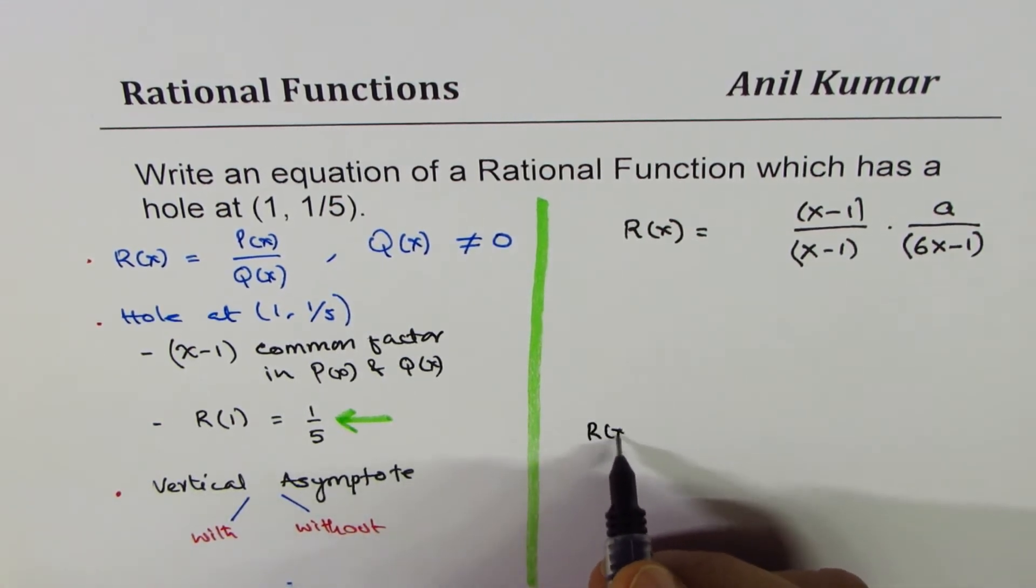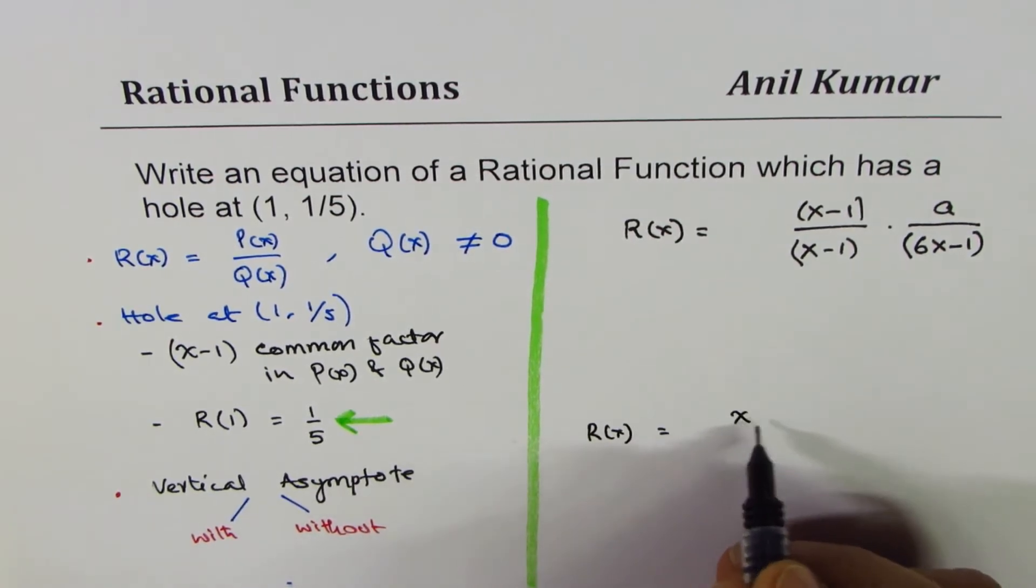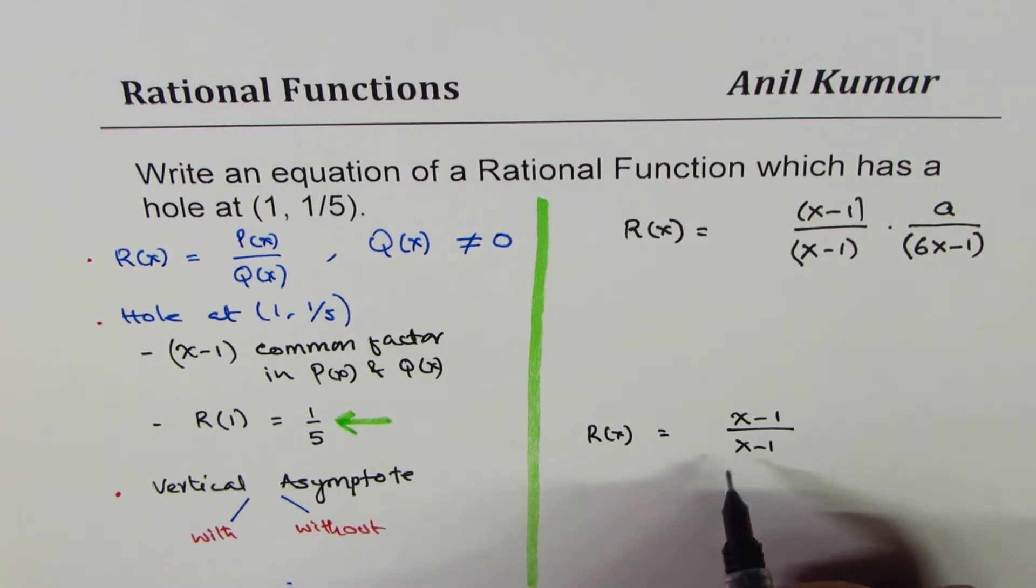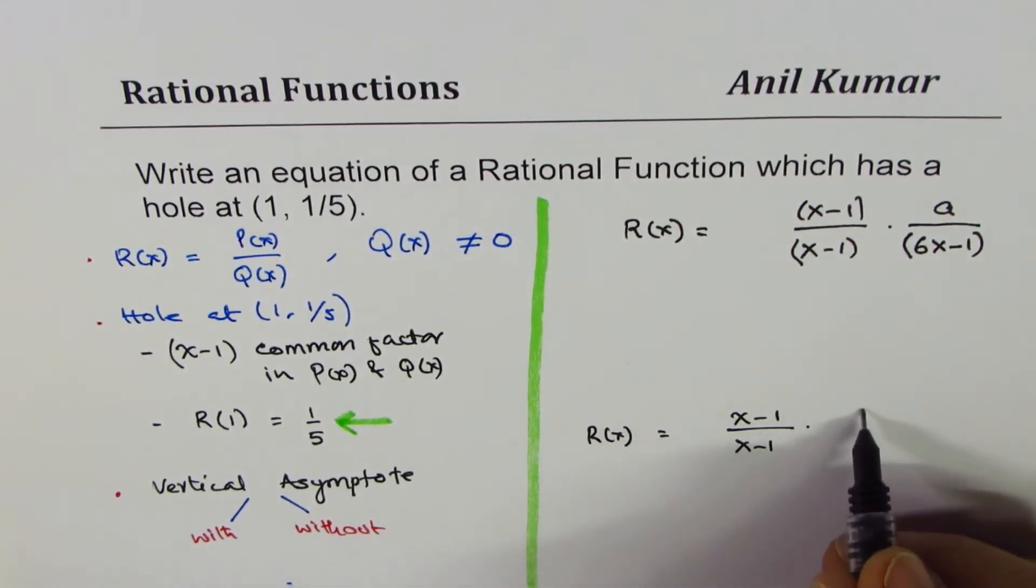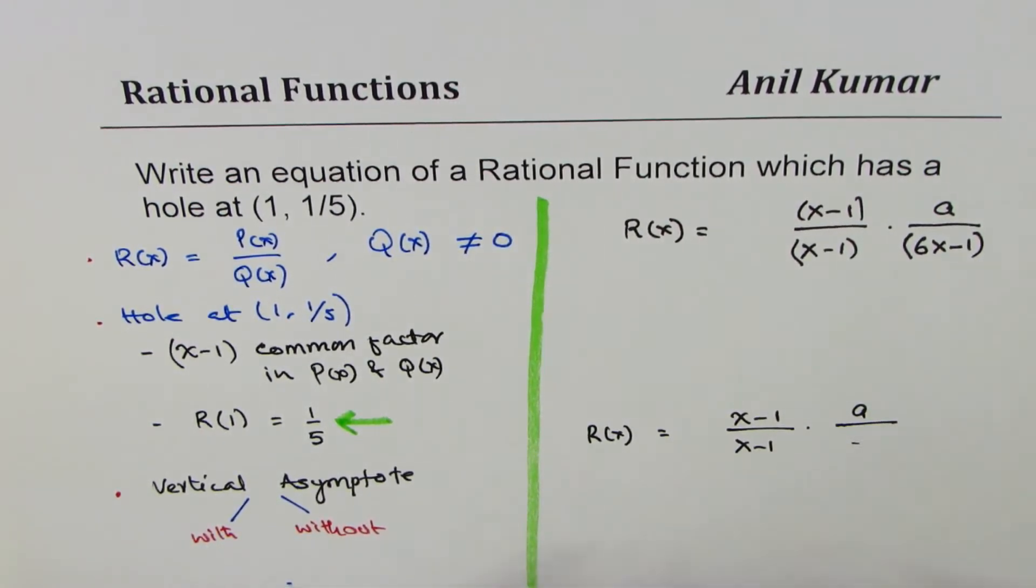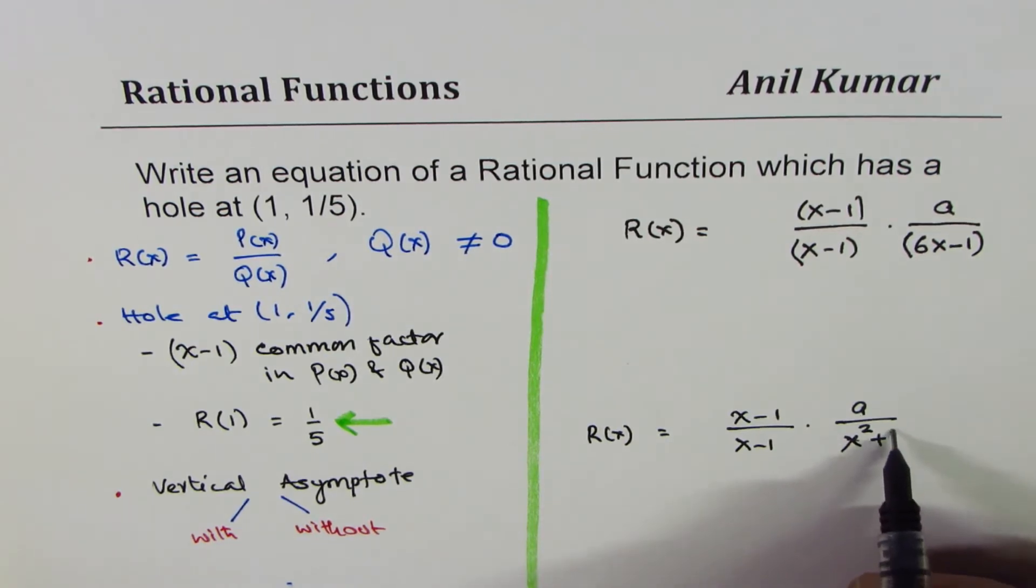Let me give you another example here, which will be (x-1) over (x-1)—the factor which cancels out—times 'a' over something in the denominator which will never be 0. That something could be x² plus something. Since for x=1 we need 5, let me write x²+4 here.